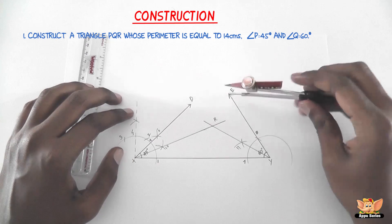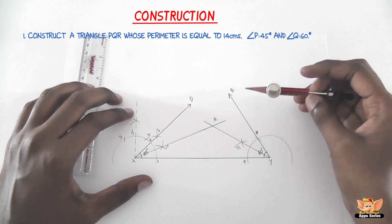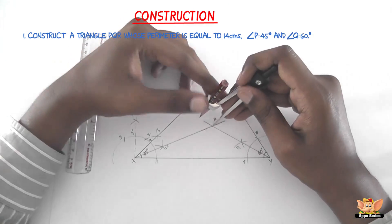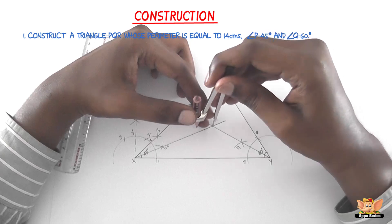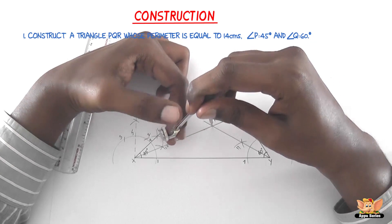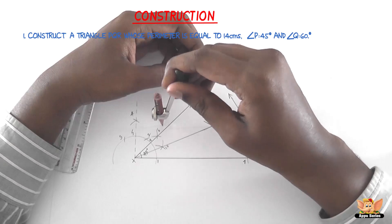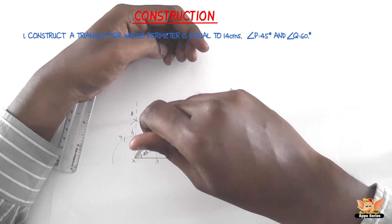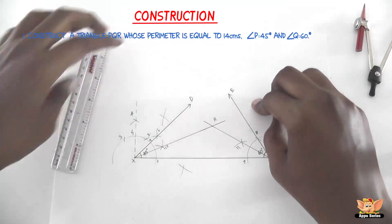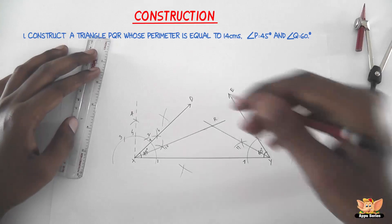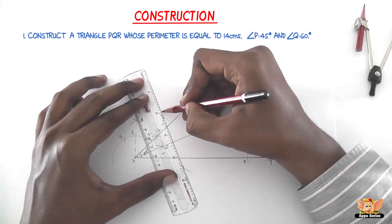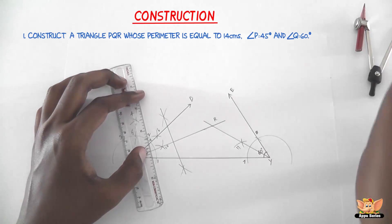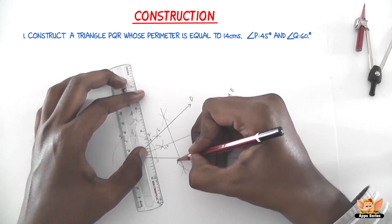The next step is to draw the perpendicular bisectors of RX and RY, marking their intersections with XY as P and Q respectively. To draw the perpendicular bisector of RX: with R as center and radius more than half of RX, draw arcs on either side of the line. With X as center and the same radius, cut those arcs. Join the intersection points — this perpendicular bisector meets XY at P.